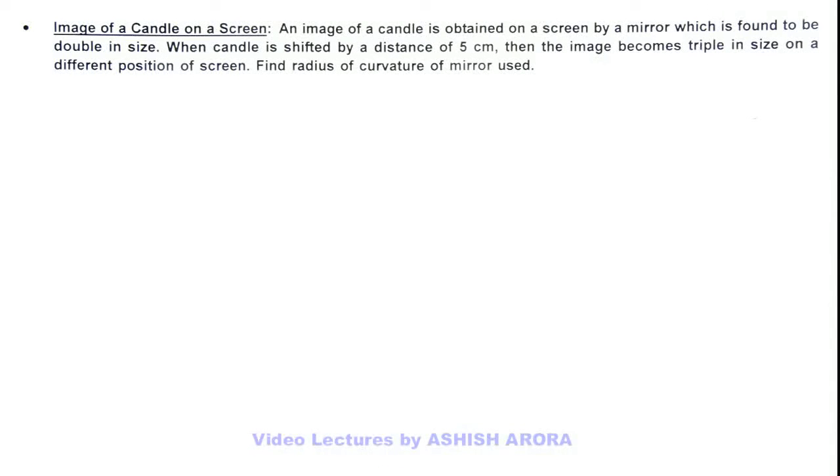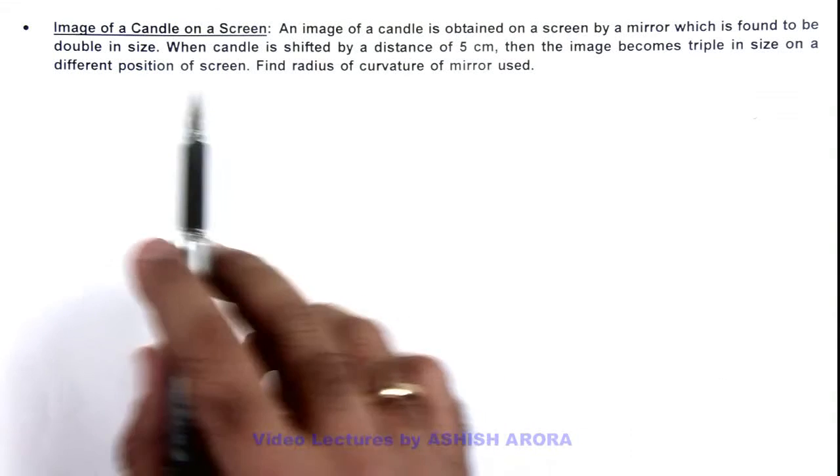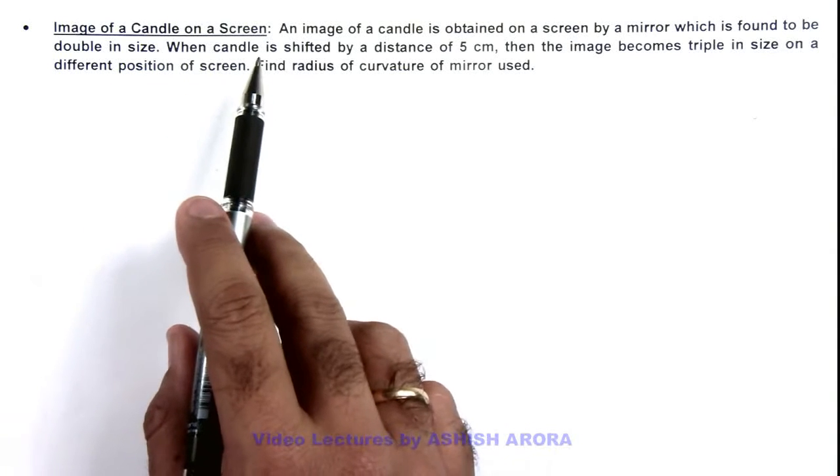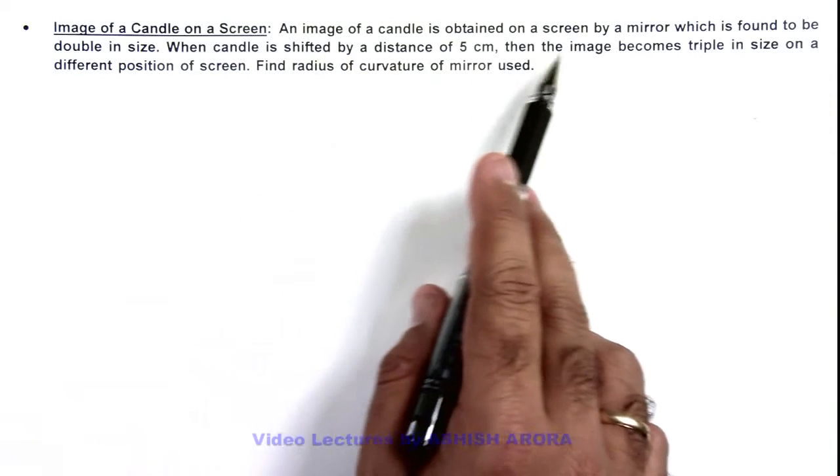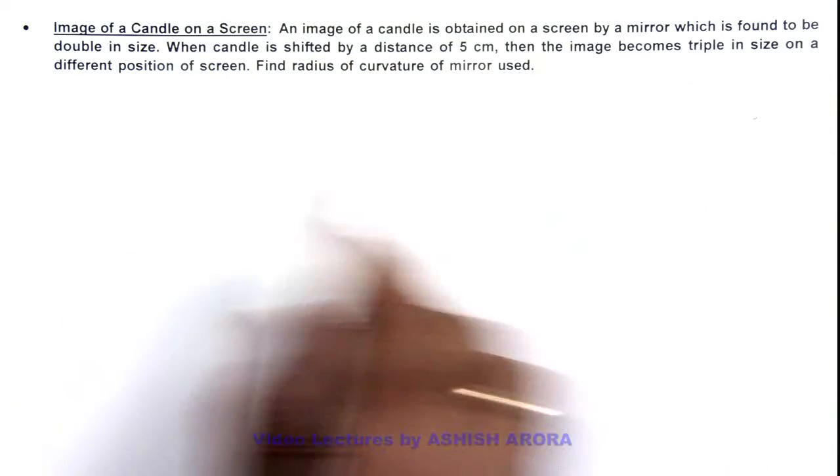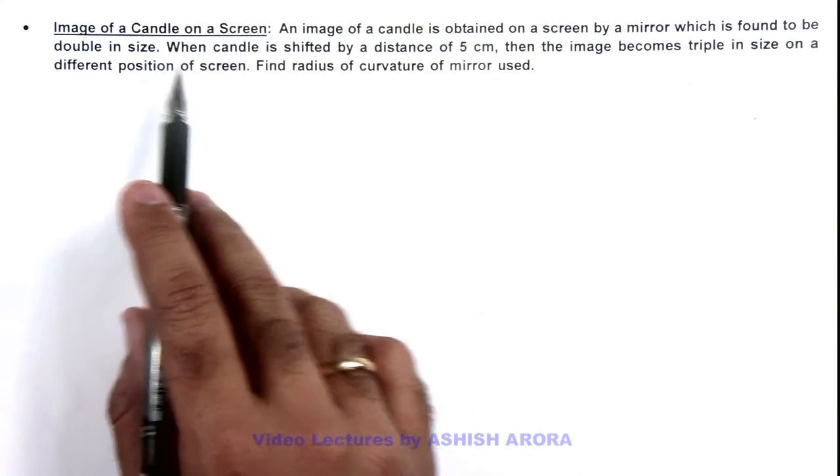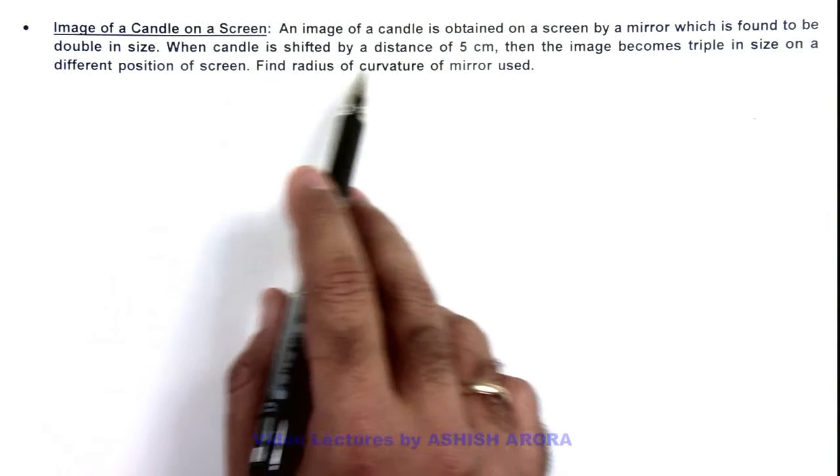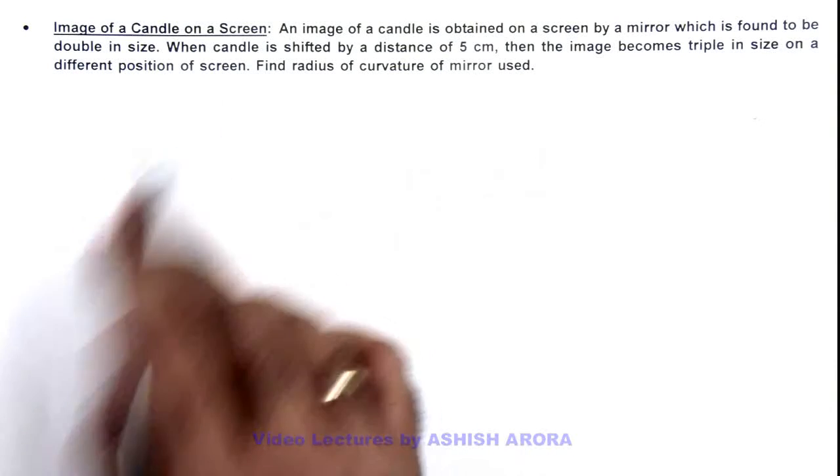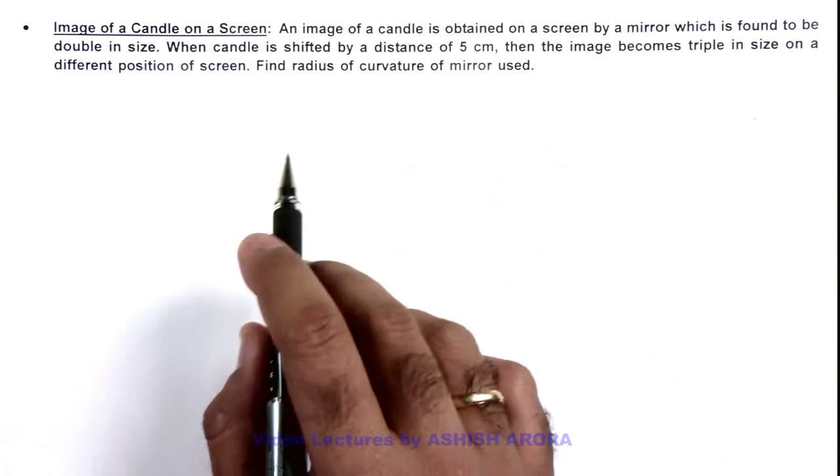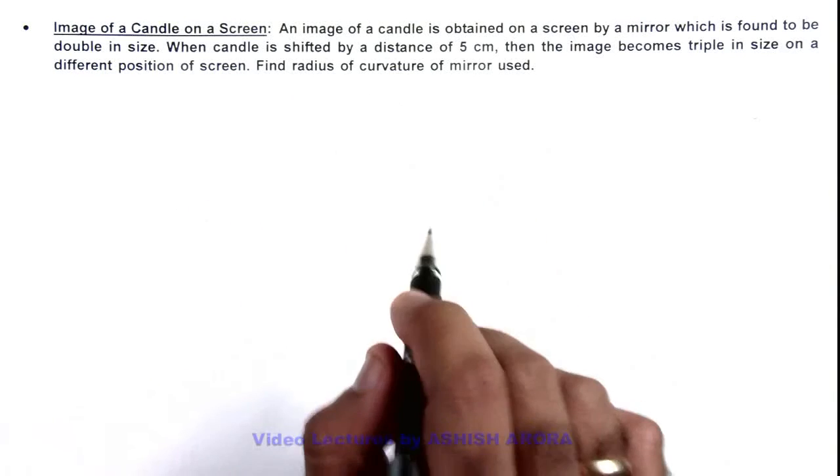In this illustration, we are going to analyze a case when an image of a candle is obtained on a screen. We are given that an image of a candle is obtained on a screen by a mirror which is found to be double in size. When the candle is shifted by a distance of 5 centimeters, the image becomes triple in size on a different position of the screen. We are required to find the radius of curvature of the mirror used.